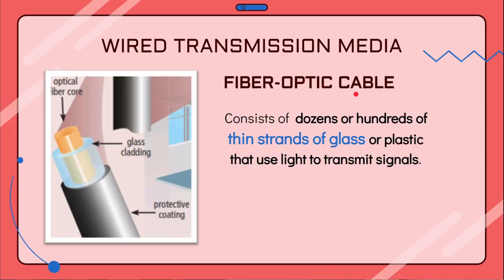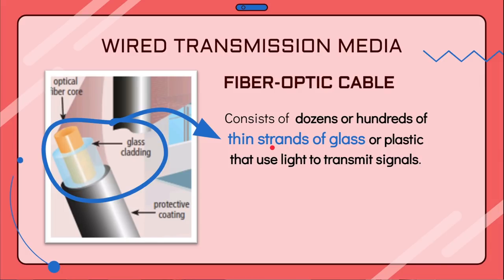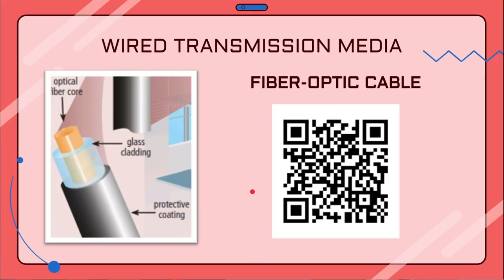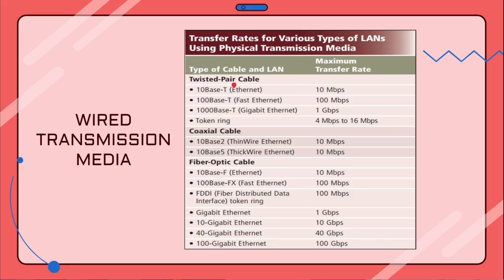Next we look at fiber optic cable. Fiber optic cable consists of dozens to hundreds of very thin glass strands — about the diameter of a human hair — protected by a protective coating. Fiber optic cable uses light to transmit signals. It is free from electromagnetic and radio interference, making it very secure and able to transmit data over long distances at very high speeds without errors. If you want to know more, you can pause and scan the QR code to watch a YouTube video, then come back and continue.